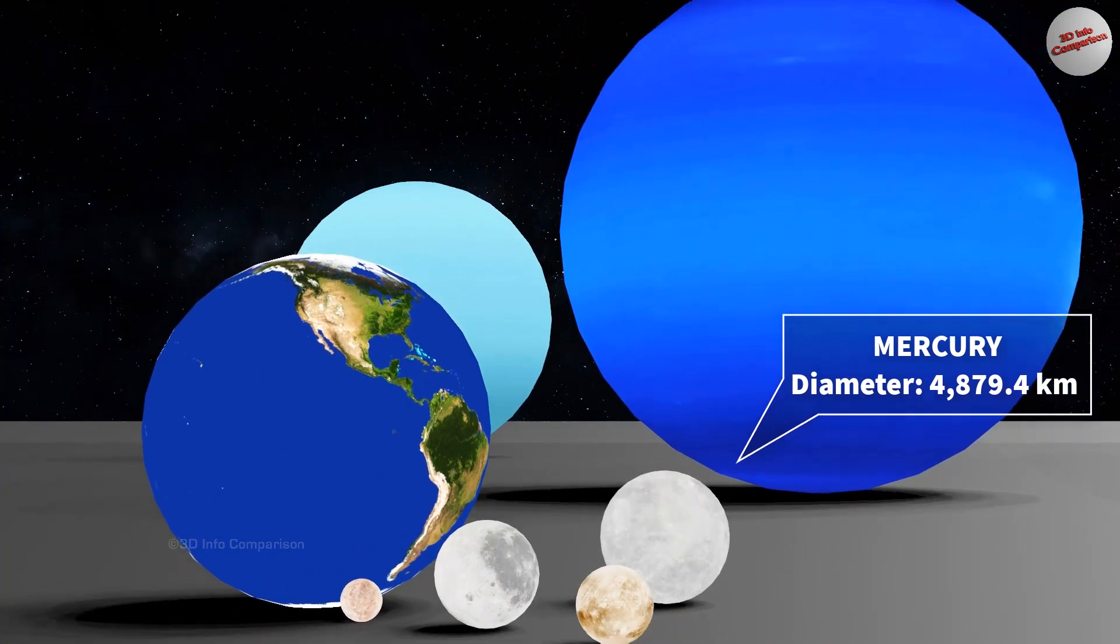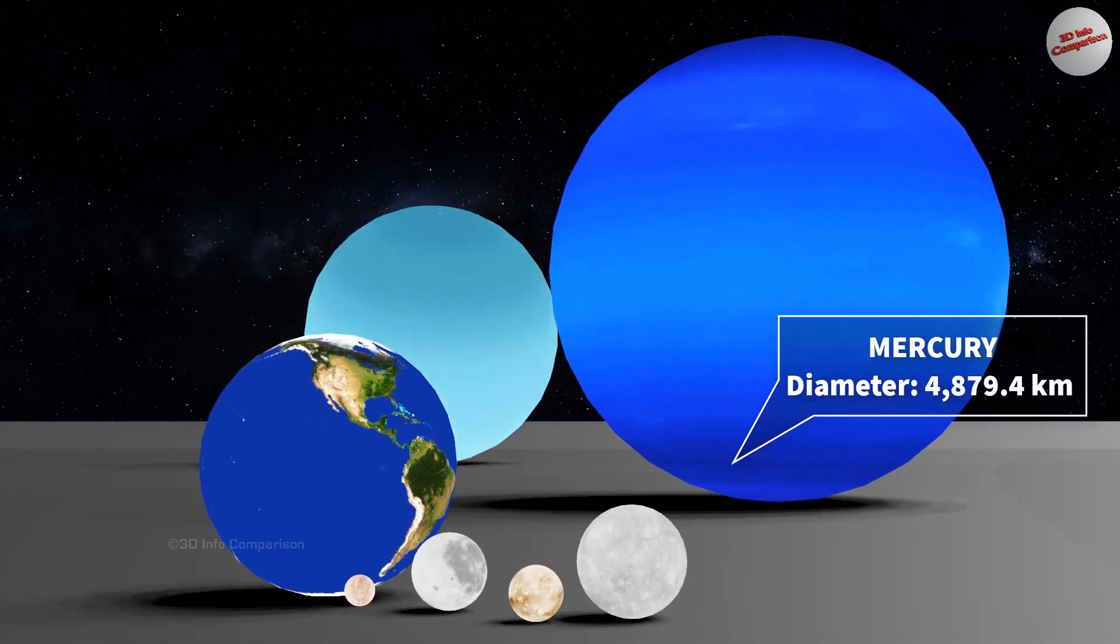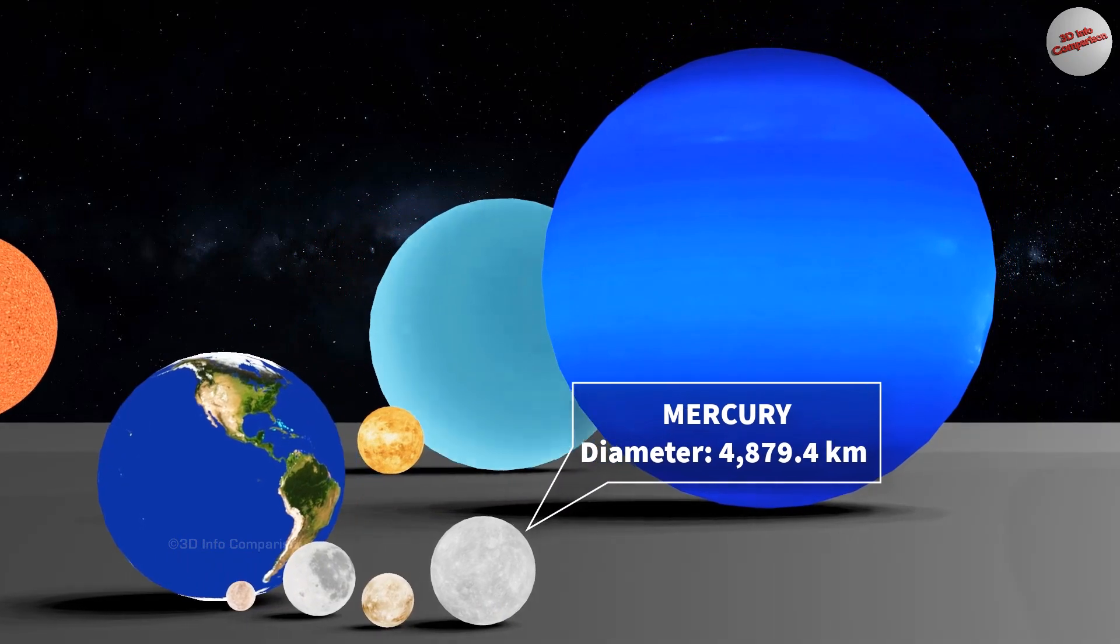Mercury is the closest planet to the Sun in our solar system. It has a diameter of approximately 4,879 kilometers.